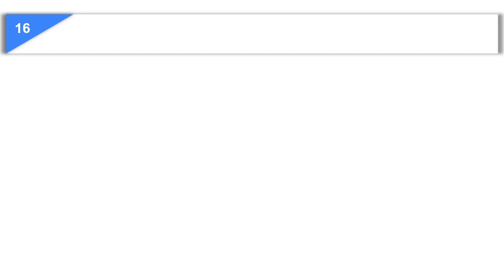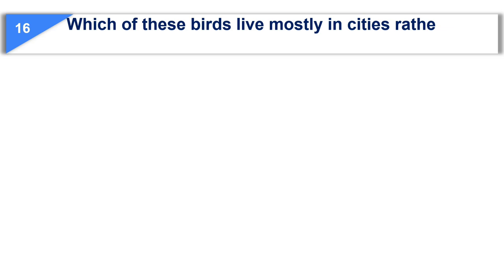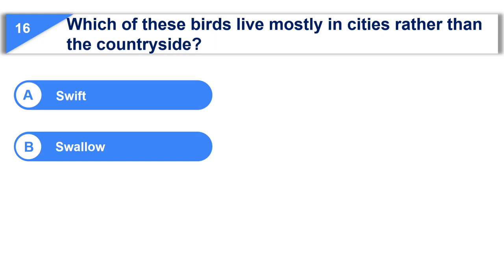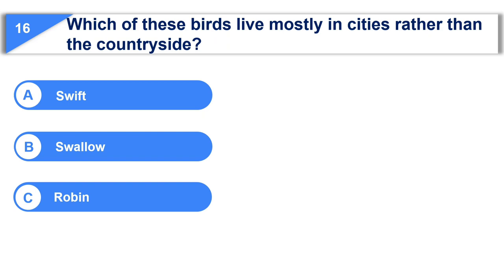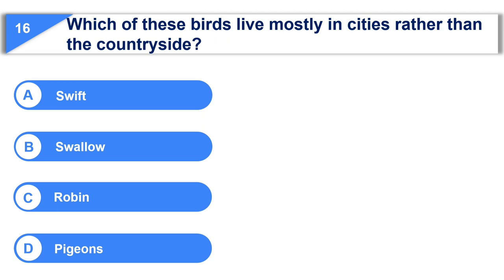The 16th question is, which of these birds live mostly in cities rather than the countryside? Option A, swift. Option B, swallow. Option C, robin. Option D, pigeons.